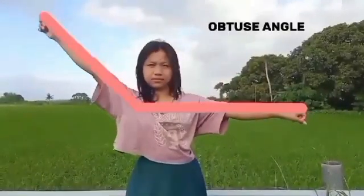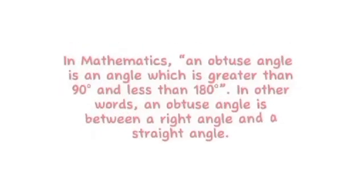Obtuse angle. In mathematics, an obtuse angle is an angle which is greater than 90 and less than 180. In other words, an obtuse angle is between a right angle and a straight angle.